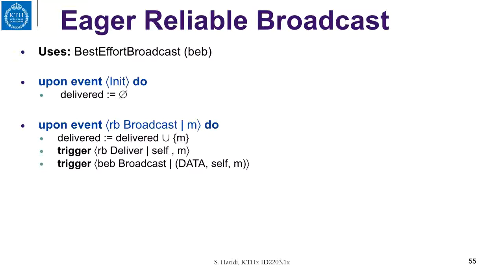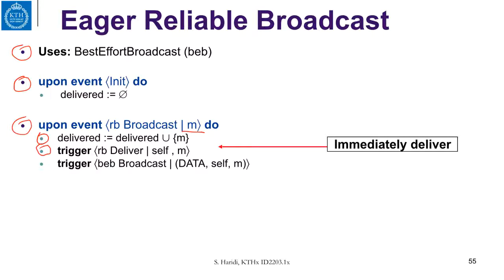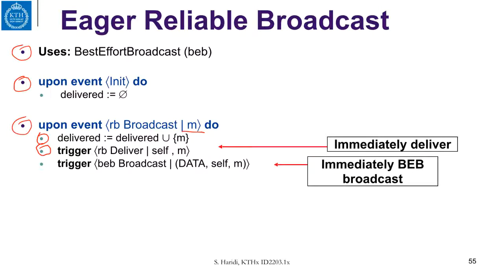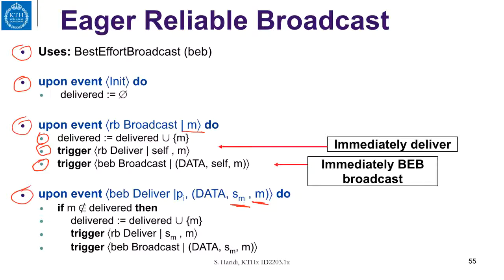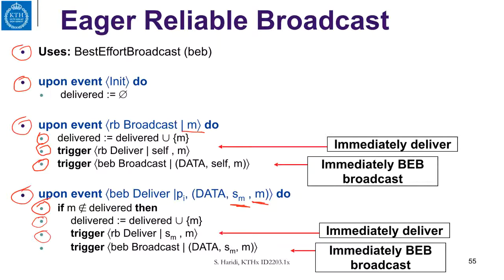Let us look at the algorithm in detail — it is quite easy. We are using rebroadcast. We have initially the delivered set empty, and whenever we get a broadcast request for message M, we add it to the delivered set, trigger a local delivery, and then immediately do a rebroadcast. Next, whenever a process gets from the rebroadcast a delivery of message M from a source, if the message is not already delivered, it immediately delivers the message, adds it to the delivered set, and then triggers a rebroadcast again — regardless of whether the process that sent the message has crashed or not.